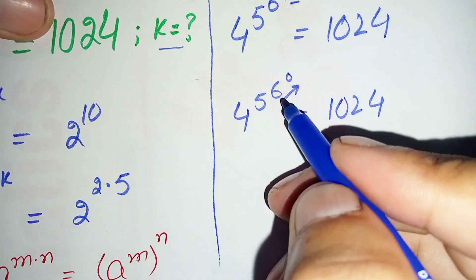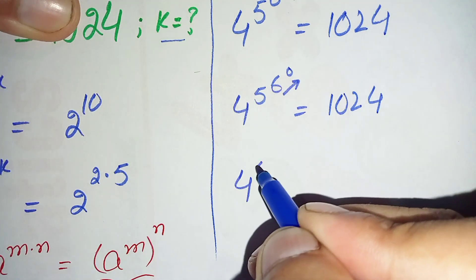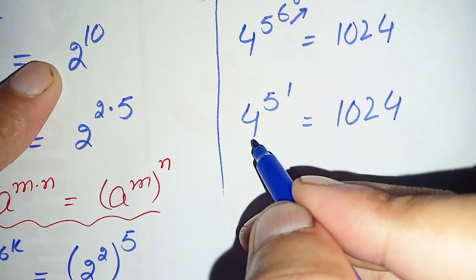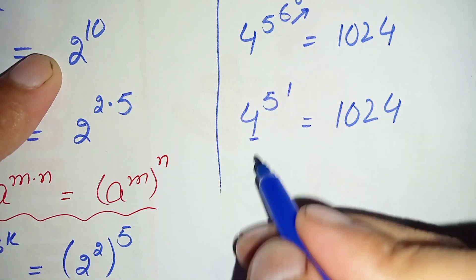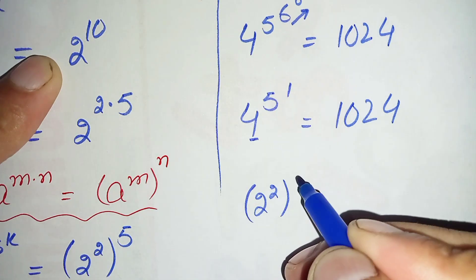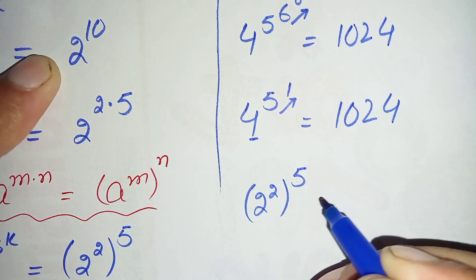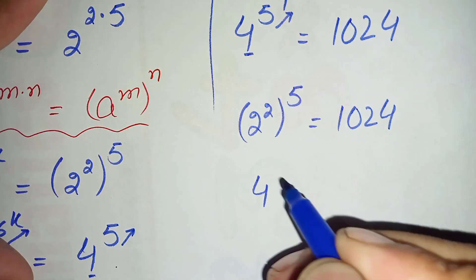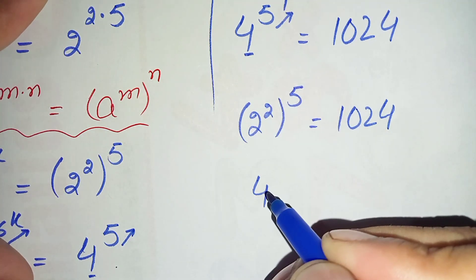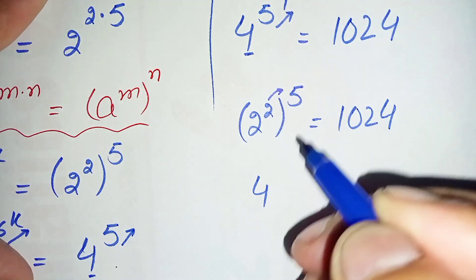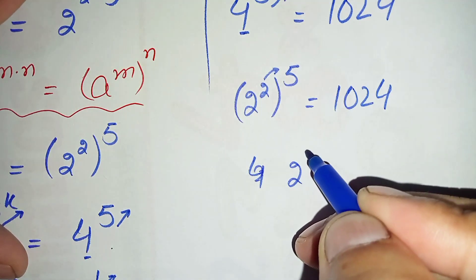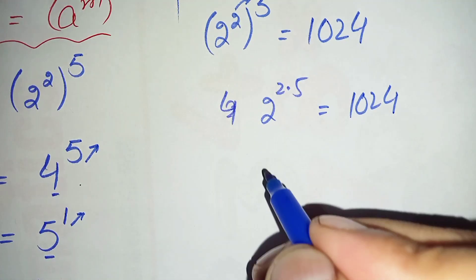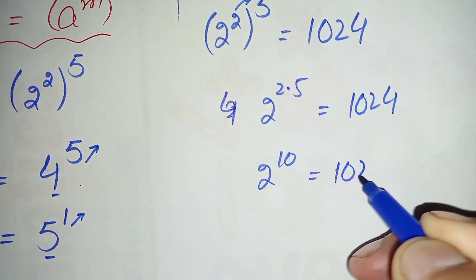First we replace 6 raised to power 0 with its value: 6 raised to power 0 equals 1. So this becomes 4 raised to power 5 raised to power 1 equals 1024. Since 5 raised to power 1 is 5, we have 4 raised to power 5 equals 1024. Now we rewrite 4 as 2 raised to power 2, and multiply the powers together: 2 raised to power 2 times 5 equals 1024, which gives 2 raised to power 10 equals 1024.